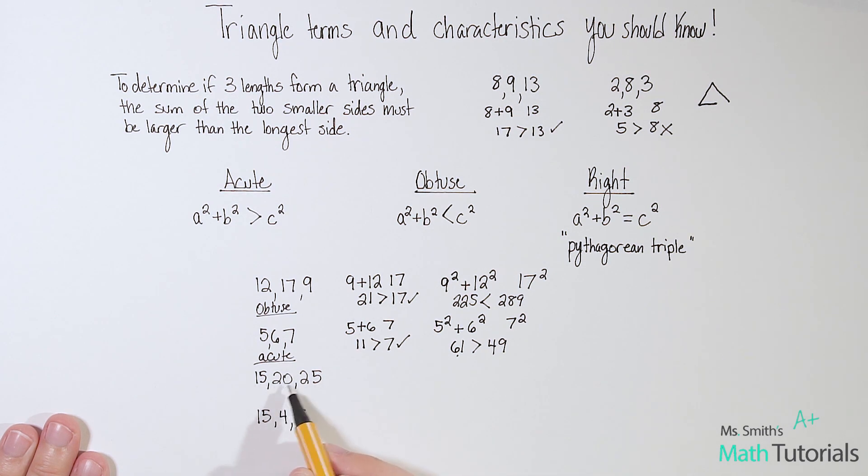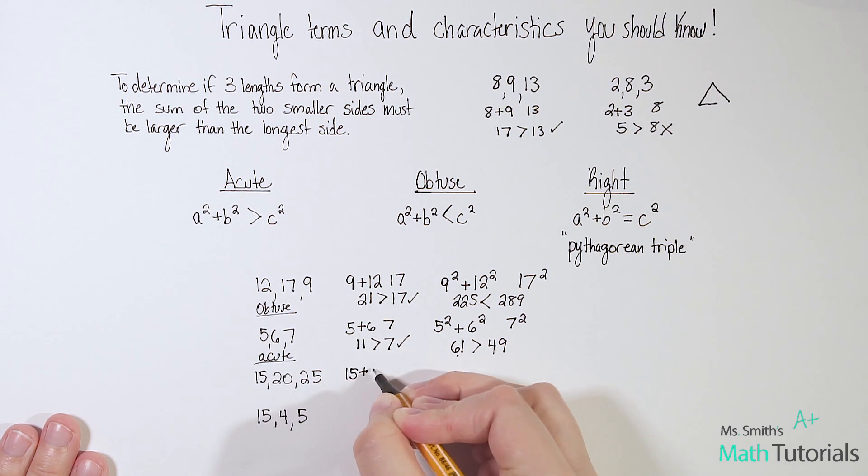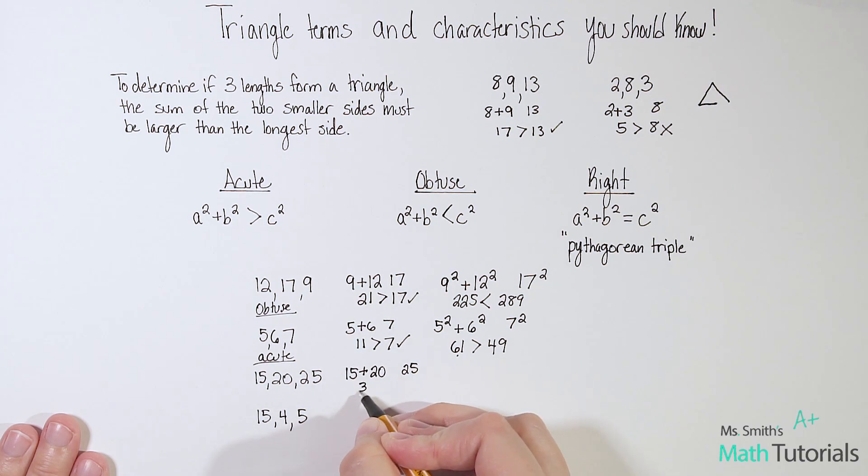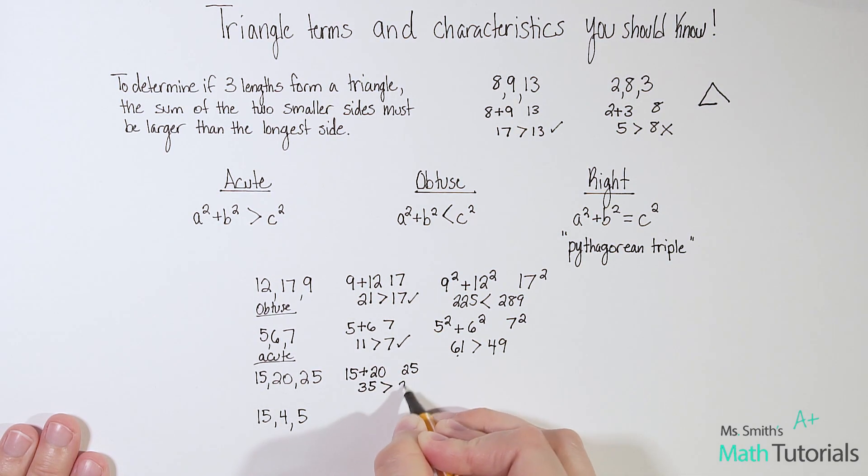Let's try this next one. So I've got 15, 20, and 25. Hopefully you're starting to get the hang of this a little bit. Let's first see if it is a triangle. Let's do 15 plus 20, my two smaller sides. And then the largest side is 25. So let's compare. 15 plus 20, that is 35. And is 35 greater than 25? Yes. Okay. So we're good. It is a triangle. Let's see what kind. So I take my two smaller sides, in this case 15 and 20.